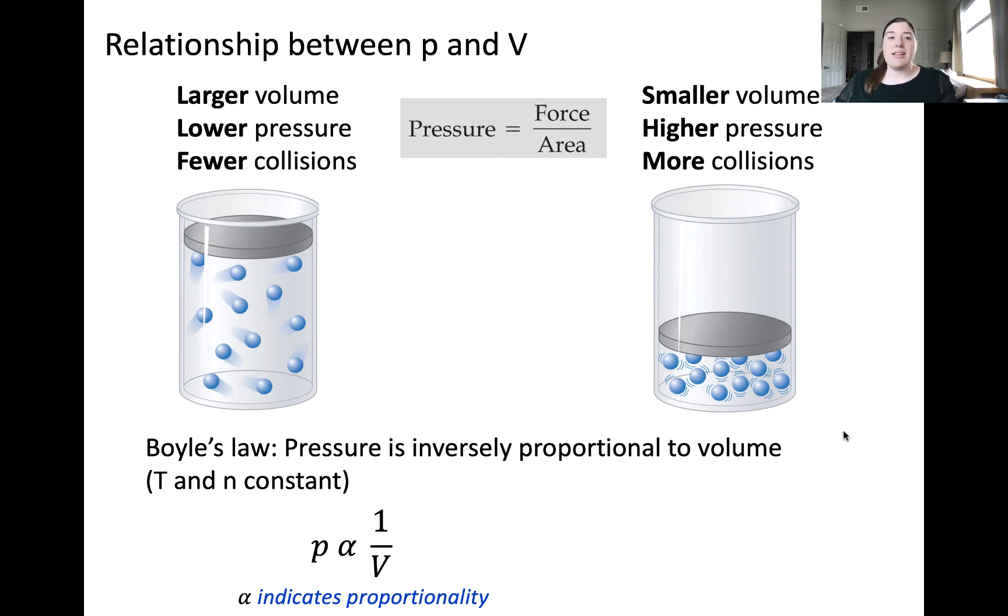We can express this mathematically as P1 times V1 is equal to P2 times V2 if all other variables in the system are constant. Here, one can be referred to as the initial pressure and volume conditions of the system, and two can be referred to some final set of conditions, pressure and volume.